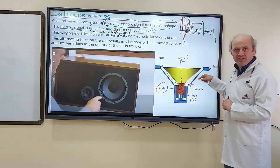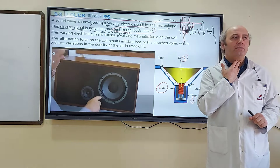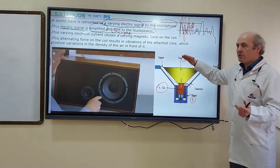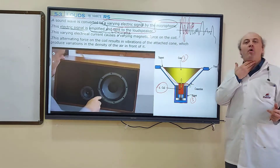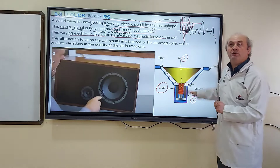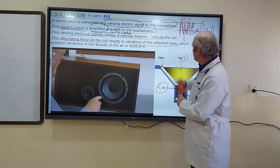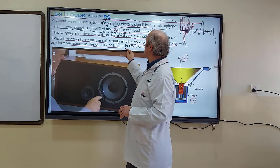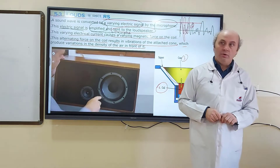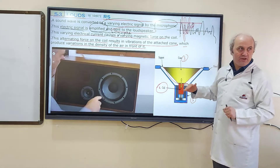As the coil is vibrating, the paper cone attached to the coil also vibrates, producing sound — vibrations of the air molecules. Just as when you are talking your vocal cords are vibrating and those vibrations are transmitted to the air, here the paper cone vibrates because the coil is vibrating, producing a big sound. This alternating force on the coil results in vibrations; the cone starts vibrating, which produces variations in the density of the air in front of it. There are regions of high density called compression and low density called rarefaction — so sound is produced this way.